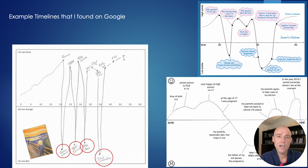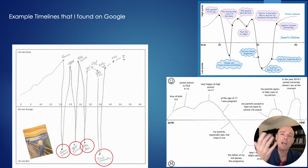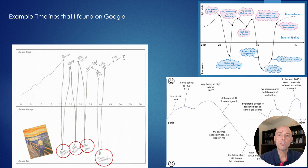When you do the timeline exercise, you then begin to ask yourself: what was going on when things were good? What circumstances do I need? What environment do I need? What needs to be in place for me to be at my best? And when things haven't gone great, you can look at that and say, what was going on there? Then you try to turn that around — this wasn't great, so what do I need instead for me to thrive and to succeed? The workbook has some questions to help you reflect.